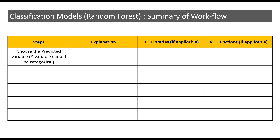First, we must select the predicted variable, and it is important to note that the data type of this predicted variable has to be categorical. Usually, the predicted variable arises from a business case or a business problem. In R, we have a default package called the utils package. The utils package has a function called the str function, which will help examine the data type of variables within a particular dataset.